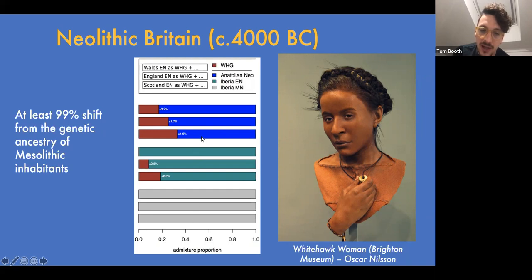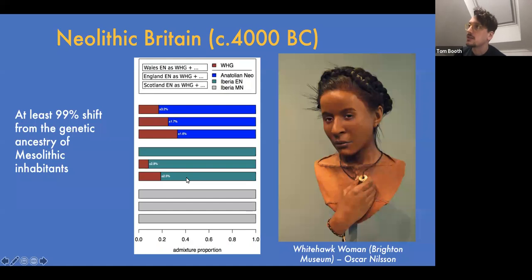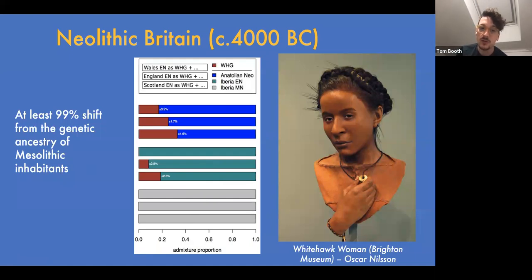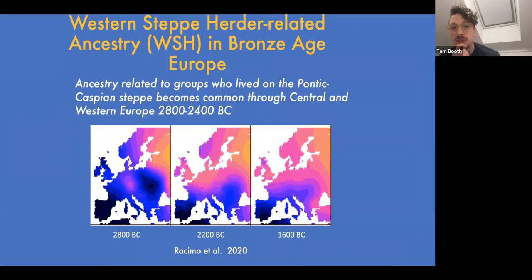When we model these Neolithic populations of Britain and fit different types of ancestry to them — Anatolian Neolithic and Western Hunter-Gatherer — they appear to have an appreciable amount of Western Hunter-Gatherer ancestry. But accounting for the fact that Neolithic farmers picked up Western Hunter-Gatherer ancestry as they moved across Europe, it's estimated there was at least a 99% shift in the genetics of the occupants of Britain over the early Neolithic period, essentially wiping out the Mesolithic genetic signature.